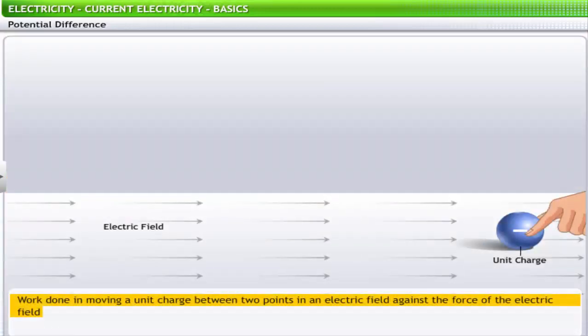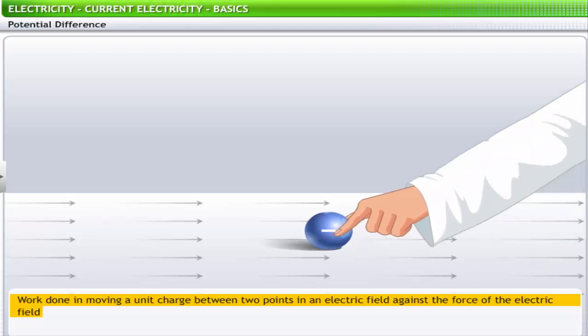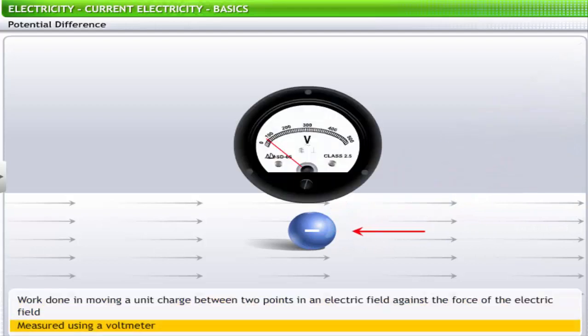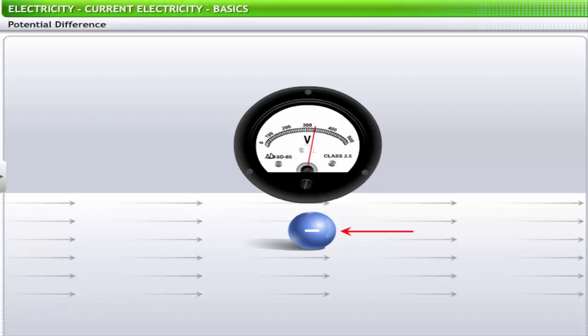Numerically, potential difference is the work done in moving a unit charge between two points in an electric field against the force of the electric field. Potential difference is measured using a voltmeter. Potential difference is often referred to as voltage and is represented by the letter V. If the work done to bring a charge of one coulomb from one point to another is 1 joule, then the potential difference between the points is 1 volt.